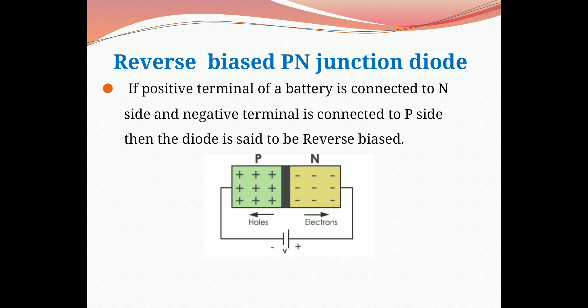This circuit diagram shows a reverse bias PN junction diode. Here the negative terminal of the battery is connected to the P side and the positive terminal is connected to the N side. In P-type there are a number of holes — positive charges — and in N-type there are a number of electrons — negative charges. When P-type is connected to the negative terminal, the holes are attracted toward the negative terminal and electrons from the N side are attracted toward the positive terminal, pushing away the majority charge carriers.